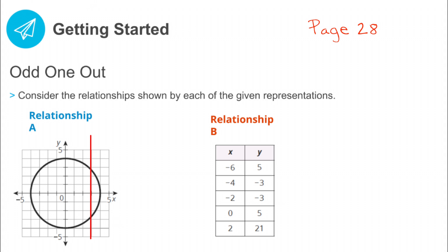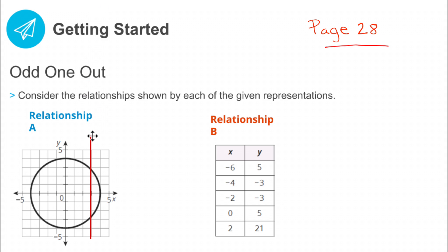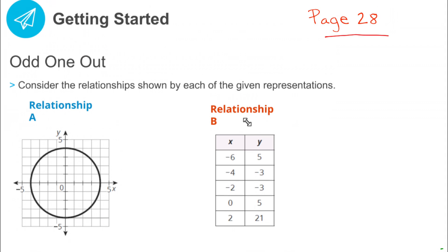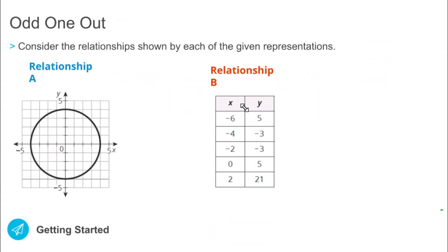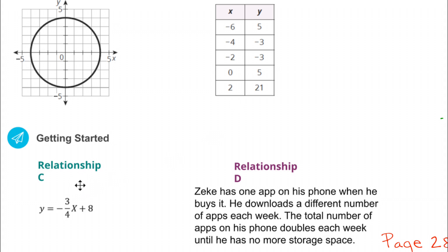Hopefully that brings back some past factoring skills and writing equivalent expressions. Let's go to page 28 now — 'Odd One Out.' Consider the relationship shown by each of the given representations. We have four different relationships. Remember, a relationship is just when you pair x and y. You can do that on a graph — for example, x is 4, y is 0, so we have a relationship in this graph.